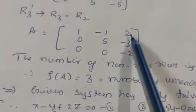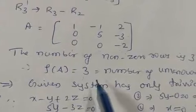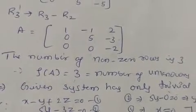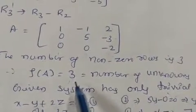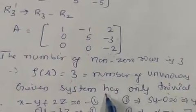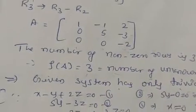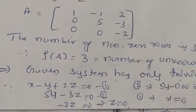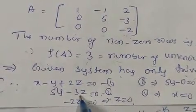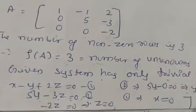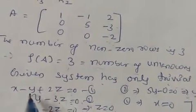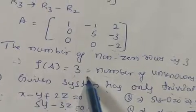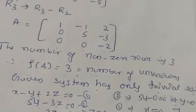We have 3 unknowns and rank equals 3. If rank equals the number of unknowns, the system has only the trivial solution (zero solution). Converting back to equations: x minus y plus 2z = 0; 5y minus 3z = 0; minus 2z = 0. The last equation gives z = 0, then y = 0, then x = 0. So the only solution is the trivial solution.